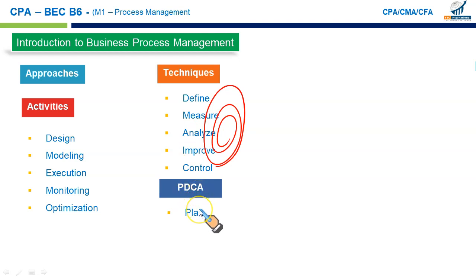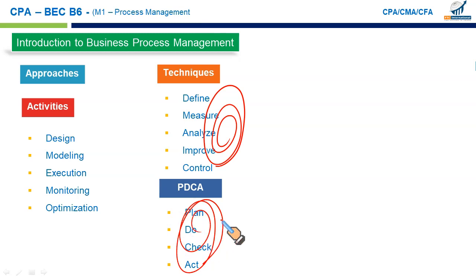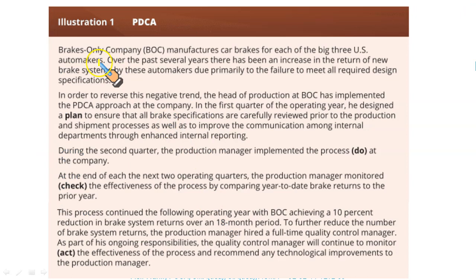Plan means design the process improvement. Do means implement the actual action — the implementation of the process improvement. Check means monitor the process improvement to see if it worked. Finally, Act means continuously commit to the process, reassess the degree of improvement, and go back again as needed. It's a cyclical process that results in ongoing refinement.